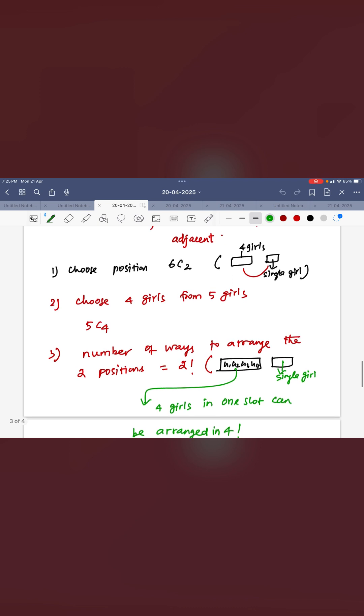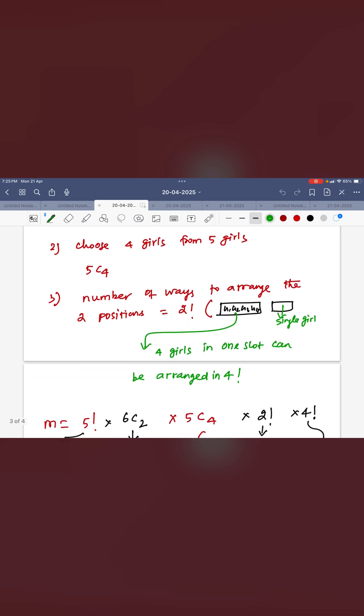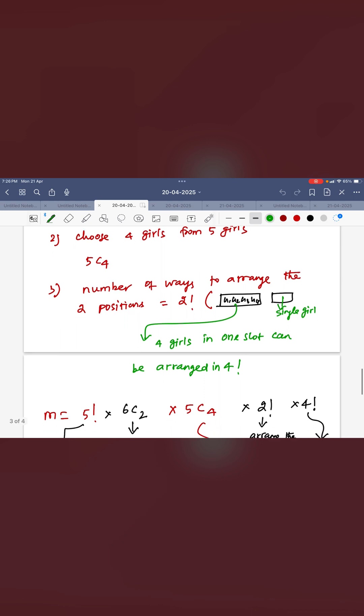Next you can see the 4 girls from 5 girls you have to select. 5C4. The number of ways to arrange 2 positions, 2 factorial. 1 is for group of 4 girls that is 1 slot. 1 slot for single girl. 2 factorial ways for the position arrangements.